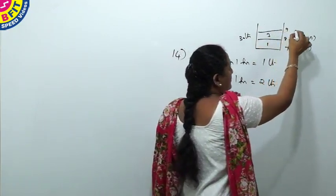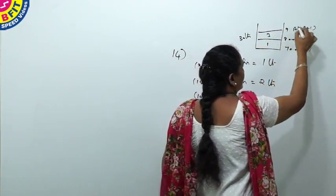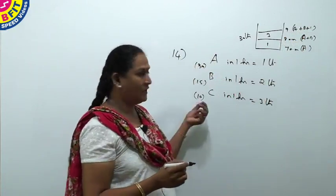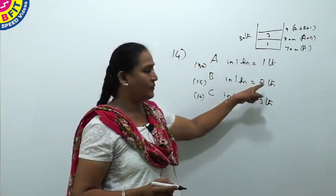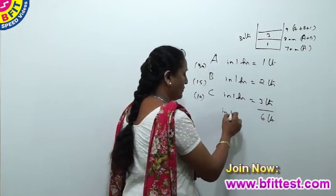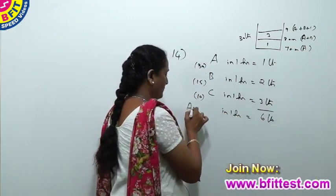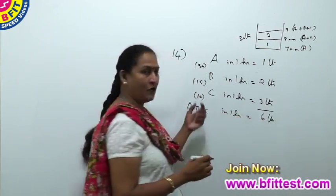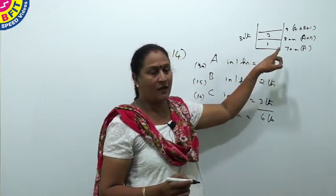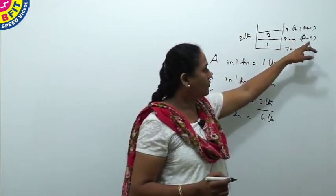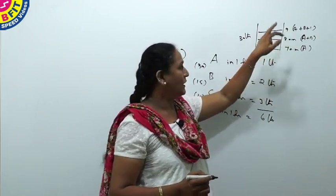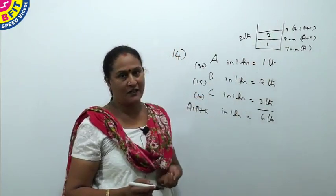At 9, C is also open. At this point, we have all the 3 taps open. When all the 3 taps are open, how many liters they can pour? 1 plus 2 plus 3, 6 liters in 1 hour. At 7 o'clock, A is open and it pours 1 liter. At 8, B is open together with A, both the taps pour 3 liters. When we check at 9 o'clock, we have already 4 liters of water in the tank.